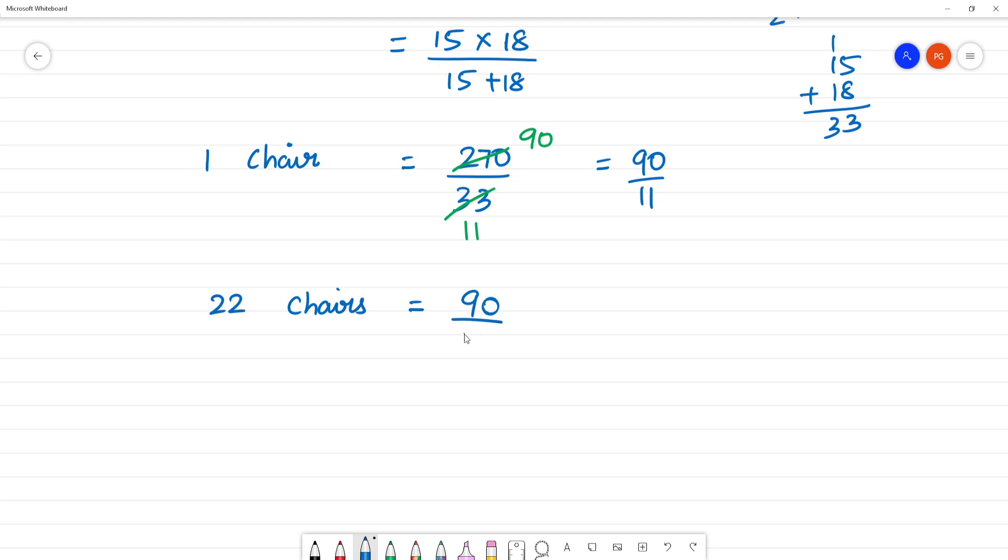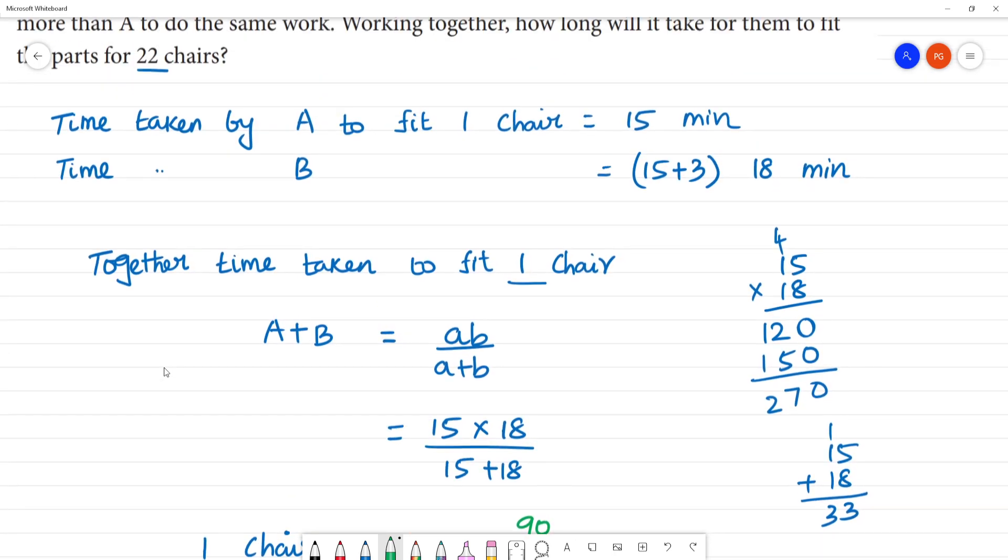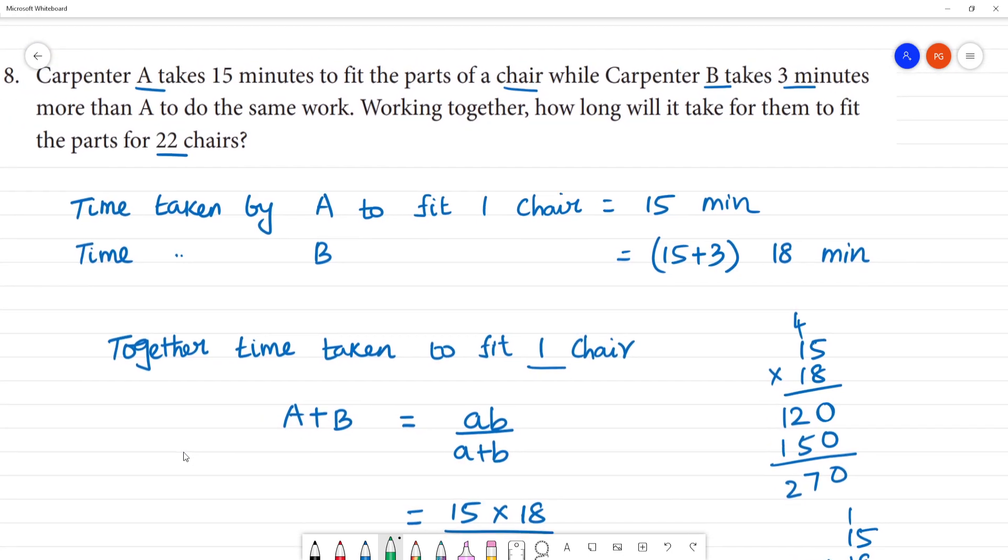For 22 chairs: 90 times 22 divided by 11 equals 180 minutes. 180 minutes equals 180 divided by 60, which is 3 hours. So the 22 chairs can be fixed in 3 hours.